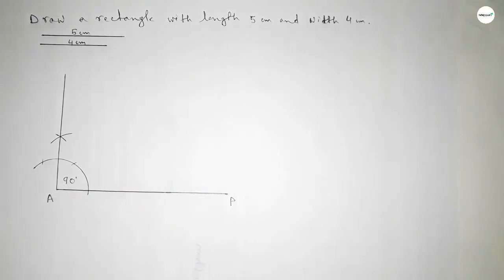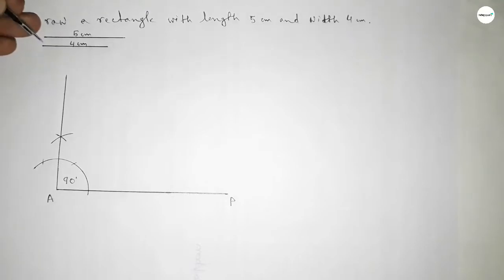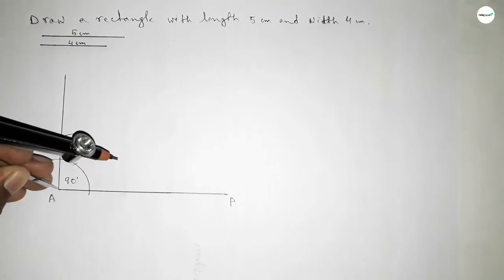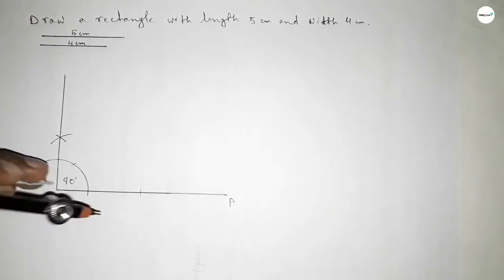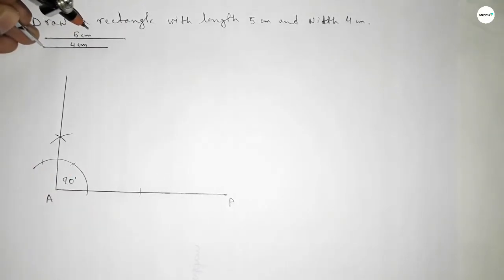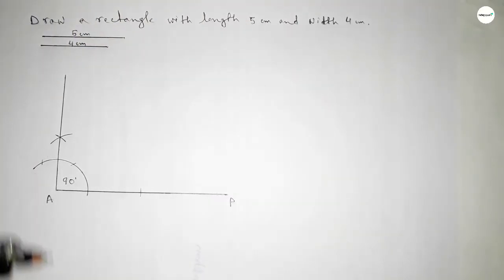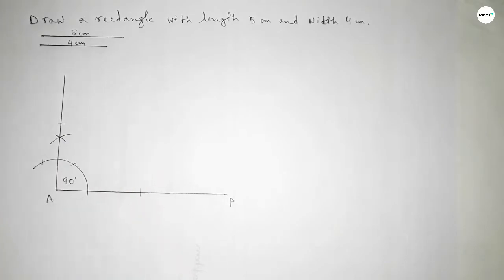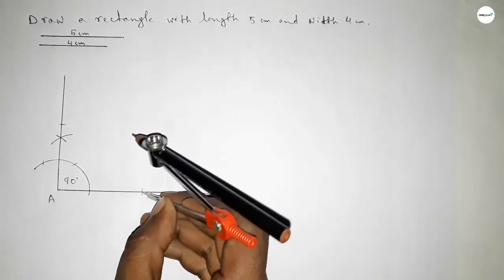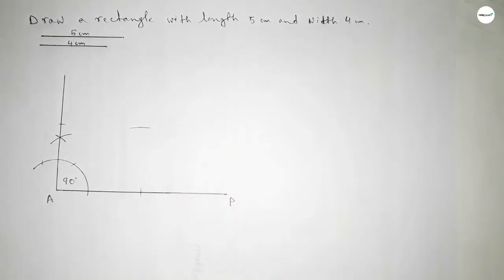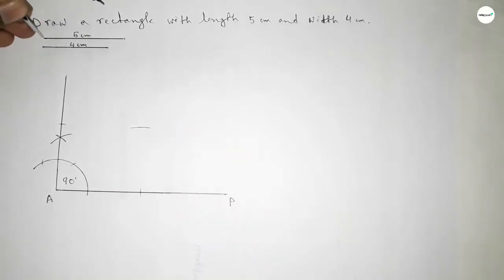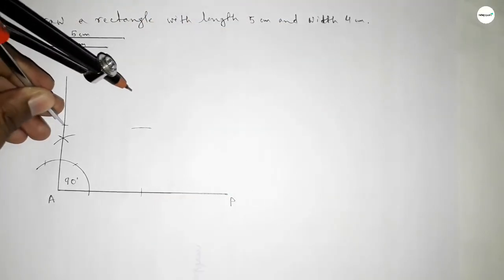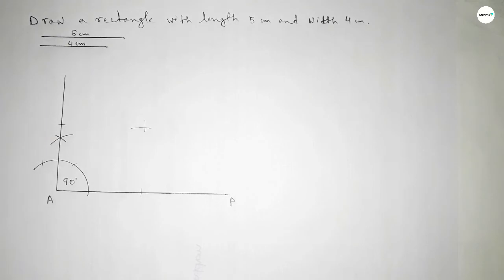This is a 90 degree angle. Now taking the length 5 centimeters by compass, putting the compass here and marking the point. Next, taking the length 4 centimeters by compass, putting the compass here and cutting. Again with the same length 4 centimeters, drawing an arc. Then taking the length 5 centimeters and cutting to mark the intersection point.